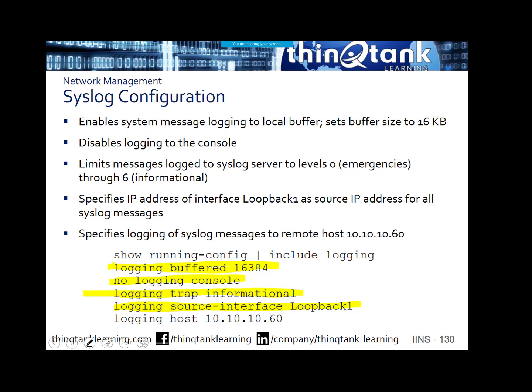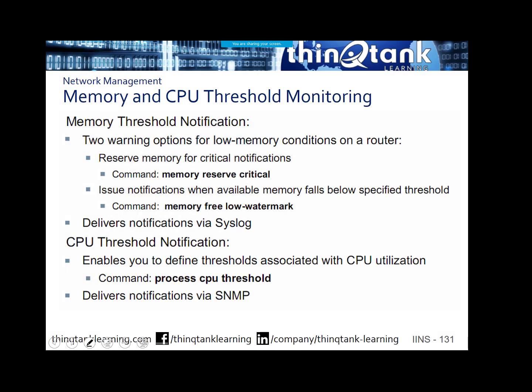Logging host 10.10.10.60 — obviously that's going to allow us to specify where the syslog messages are going to go. Another option that should be kind of a best practice standard is to implement some sort of memory and CPU threshold monitoring. There's a whole slew of documents on Cisco's website that describe how to lock down your router so that you always have guaranteed resources available, and you get alerts and notifications when you hit those different levels. Most people don't implement it though — you're getting a level of visibility that's usually not necessary.